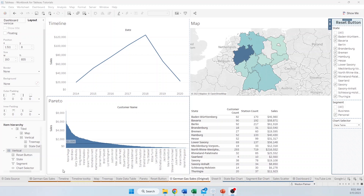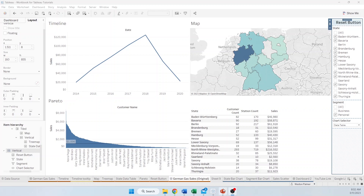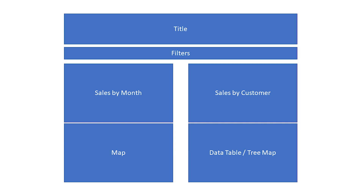This is a dashboard we created by just dragging things on, and as filters came up, they showed up on the right-hand side. When dealing with containers and dashboards in general, it's important to have a good idea of what you're trying to accomplish. I'd like to have a title on top, a row of filters below the title, then sales by month and sales by customer — the line chart and bar chart — and below that the map. There's also a data table and a tree map that are switched using a parameter.